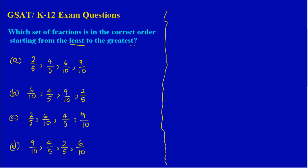Let's start with two-fifths. To convert a fraction to a decimal, the denominator goes outside and the numerator goes inside for long division. Five into two — I can't divide, so I place a decimal point above the two and add a zero, making it twenty. Five into twenty goes four times, four fives give twenty, and twenty minus twenty leaves zero. So two-fifths equals 0.4.